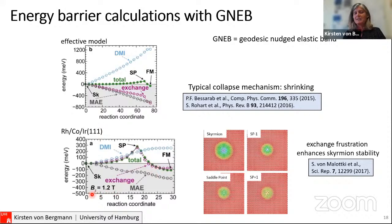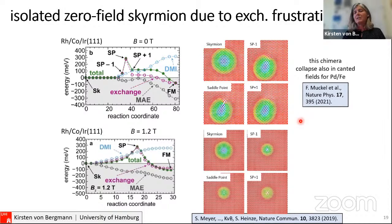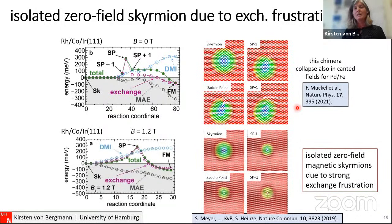These calculations were done at 1.2 tesla, but for zero-field skyrmions the calculation also found a very high energy barrier. However, the collapse mechanism is different: it doesn't just shrink and collapse from the center — instead, it is cut from the side and then collapses from there. Because this mechanism costs so much energy, our skyrmions are very stable. This kind of mechanism was also proposed for palladium-iron with experimental data. So we can indeed have isolated zero-field magnetic skyrmions stabilized by strong exchange frustration.